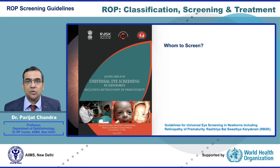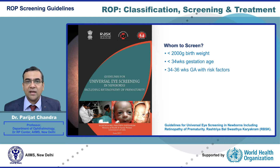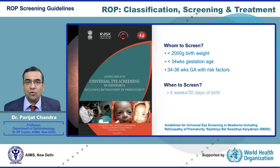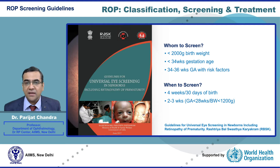The guidelines suggest screening babies with less than 2000 gram birth weight or less than 34 weeks gestational age. Larger babies up to 36 weeks gestational age can also be screened if they have systemic risk factors for ROP. Screening should be done at 4 weeks or 30 days of birth. For very small babies less than 28 weeks gestational age or less than 1200 gram birth weight, screening can begin as early as 2 to 3 weeks. It is good practice to screen once before discharge from the NICU or SNCU.